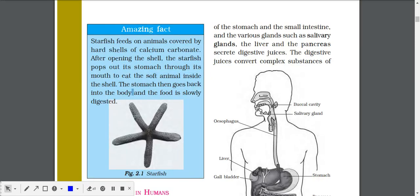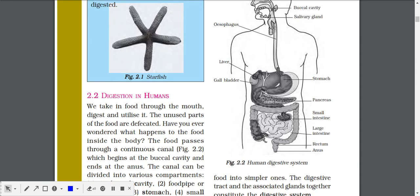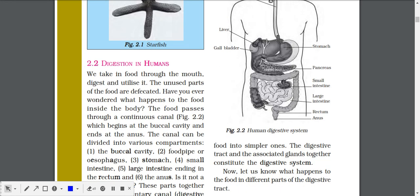They digest from that soft covering through the stomach. The stomach then goes back into the body and the food is slowly digested. So the starfish leaves that hard coating outside and digests the small soft part of the body of aquatic animals.